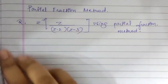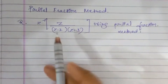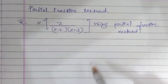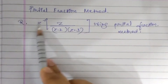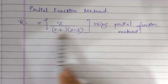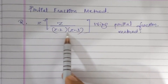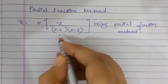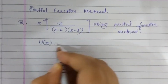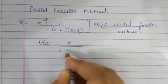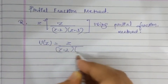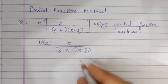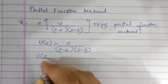In this video we'll be solving the inverse Z-transforms by the partial fraction method. The question is: Z-inverse of Z divided by (Z minus 2) into (Z minus 3). So our U(Z) is equal to Z divided by (Z minus 2) into (Z minus 3).